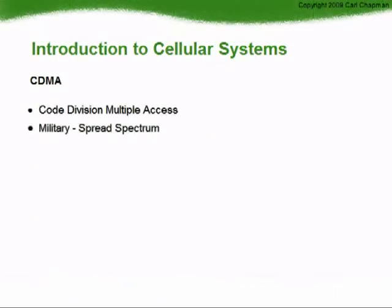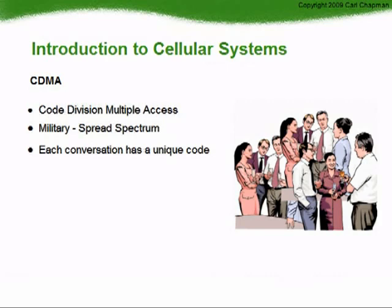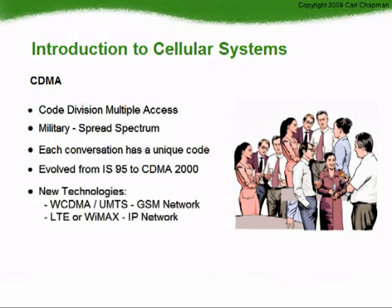CDMA, or Code Division Multiple Access, was originally designed for military spread spectrum communications. Think of CDMA like a room full of people where many conversations are taking place simultaneously, but each conversation is in a different language — a listener who understands the language can follow a particular conversation, but to others it is just noise. With CDMA, individual conversations are digitized and encoded, each call is assigned a unique code, and as long as the receiving device has the correct code, it can pick its conversation out from the crowd. Many CDMA systems have evolved from the original IS-95 to CDMA-2000. New technologies such as WCDMA or UMTS use a CDMA air interface but are actually regarded as GSM systems, using GSM protocols to communicate with a network switch.